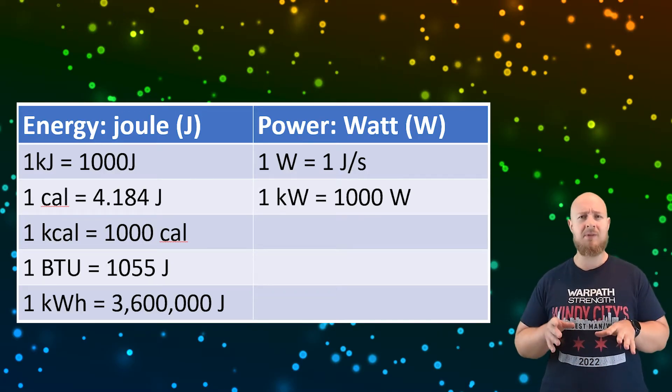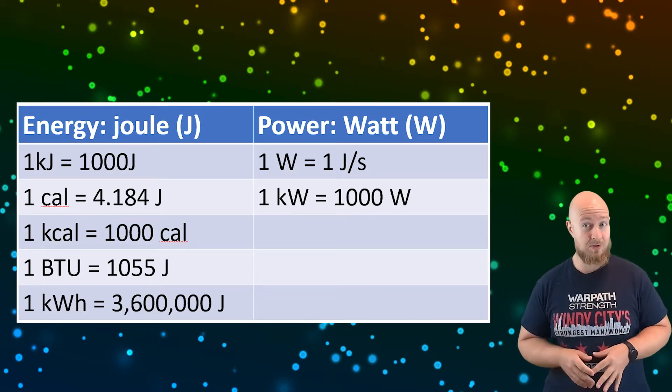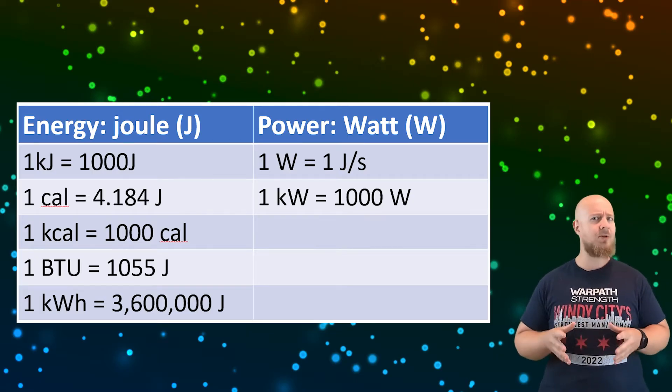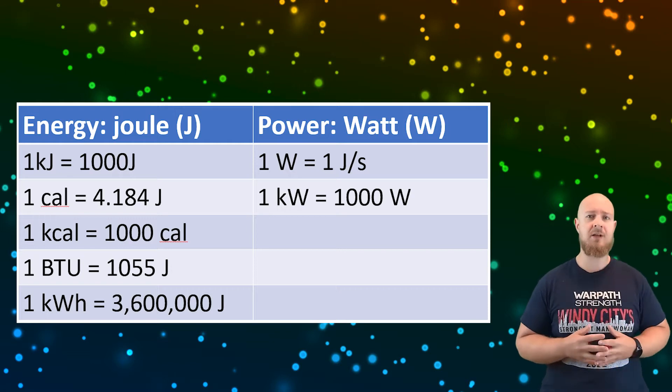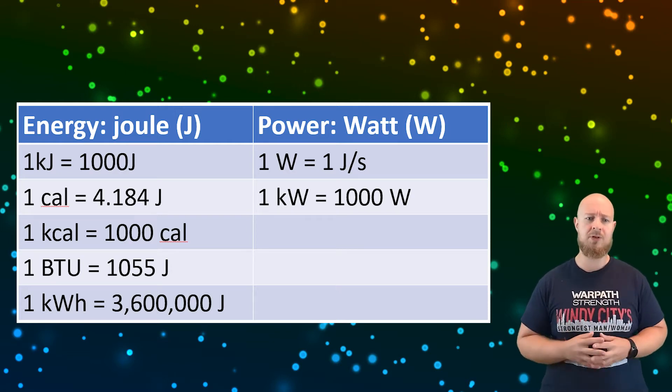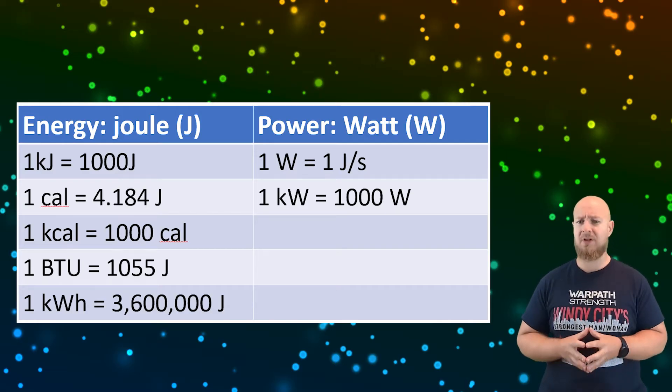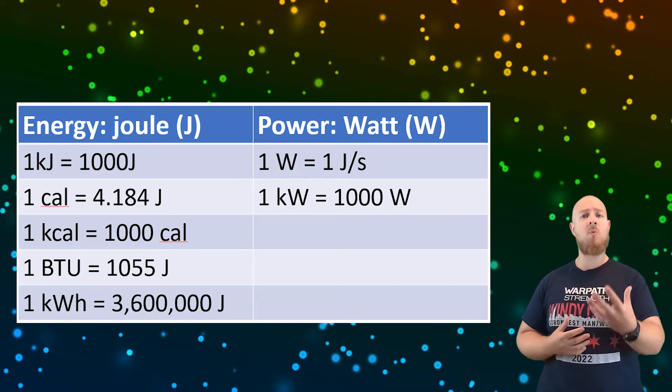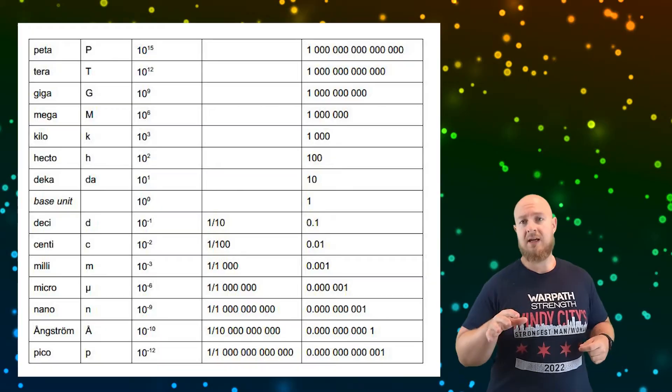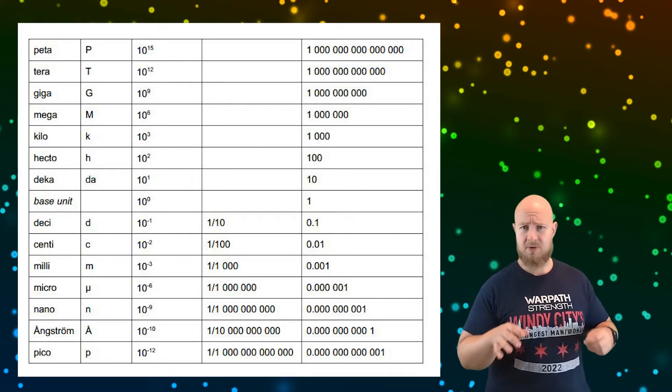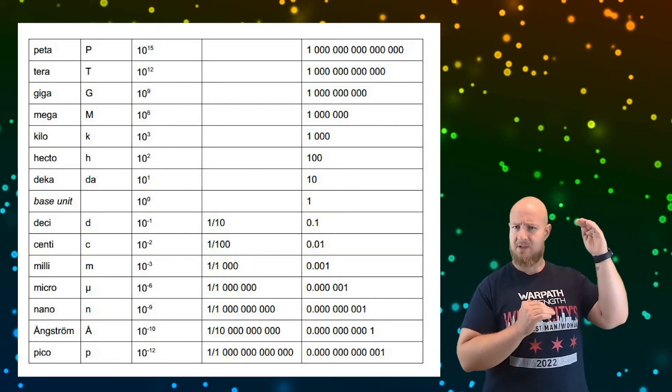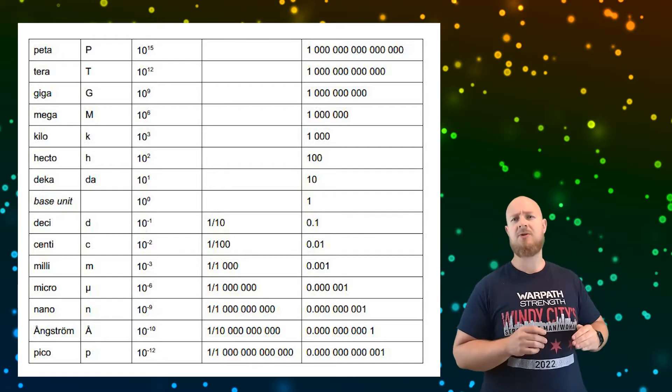Power on the other hand is how much energy is used over time, and the unit we use for power is the watt, which is equal to one joule per second. Though because that's a very small number, we generally see kilowatts, which is 1000 watts. As a note, especially for this unit, those metric prefixes come in handy again, so make sure you know kilo, mega, giga, terra, all of that stuff.